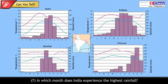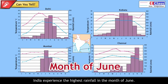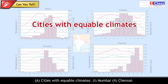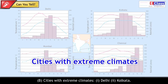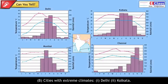In which month does India experience the highest rainfall? India experiences the highest rainfall in the month of June. Classify the cities as having equable or extreme climates. Cities with equable climates: Mumbai, Chennai. Cities with extreme climates: Delhi, Kolkata.